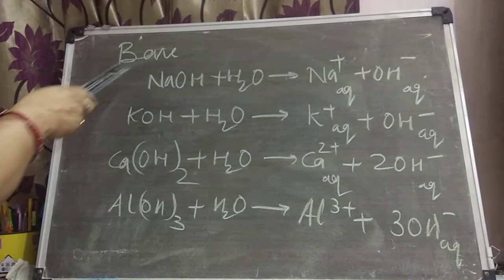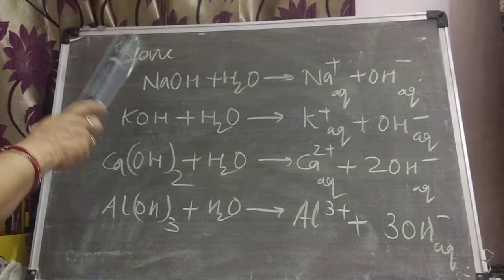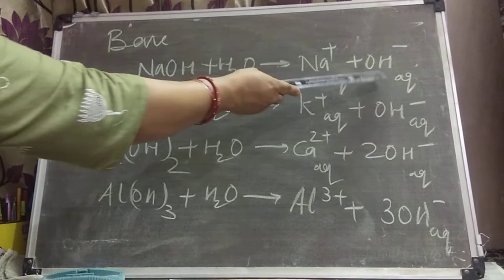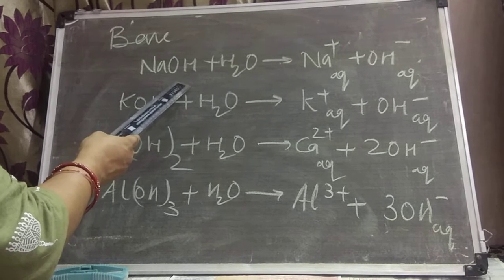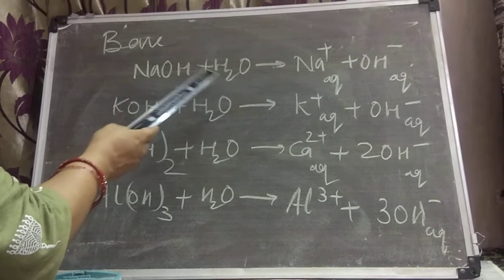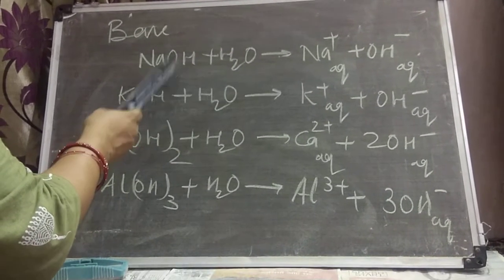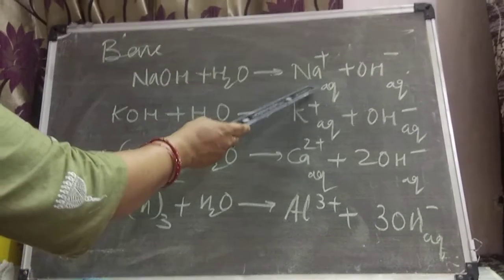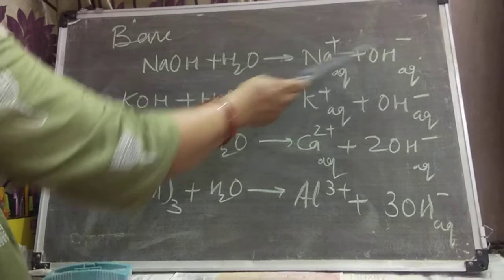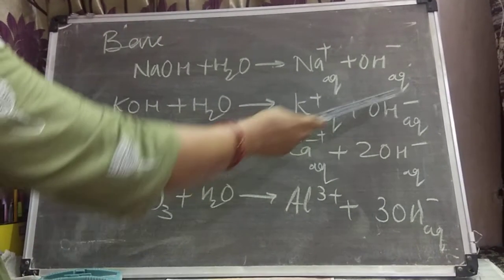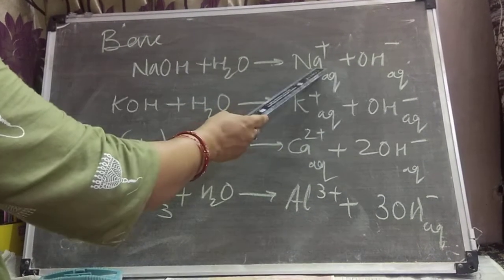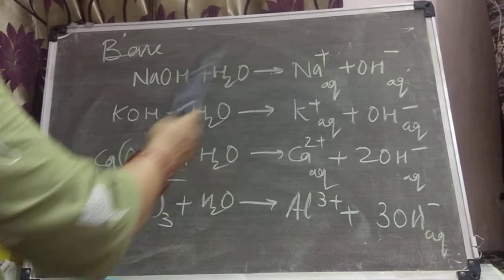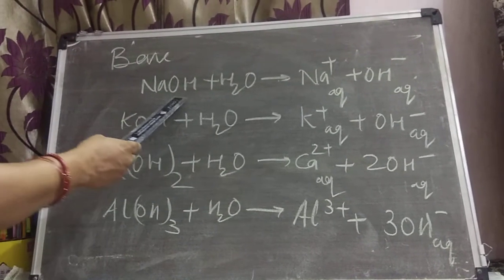Taking examples of bases also. Bases are substances which dissolve in water and furnish out hydroxyl ion. NaOH is a base because it is furnishing out OH⁻. NaOH when dissolved in water produces Na⁺ and OH⁻ in aqueous solution. Since hydroxyl ion we are getting from NaOH, that's why NaOH is regarded as base.